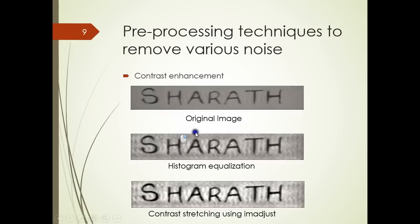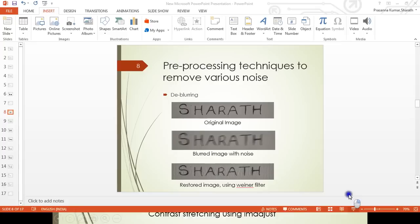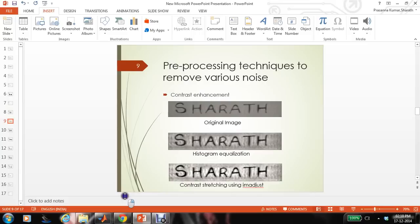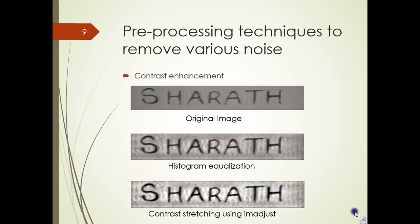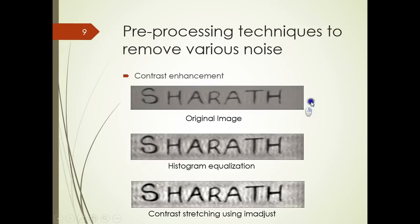One of the preprocessing techniques is contrast enhancement. Contrast enhancement is necessary because the image could be taken in various light intensities. If the intensity of the light is very dull, the image could look unclear. To address this, we need to enhance the contrast and make the image sharper, so we can easily identify the text part and remove the background. Applying histogram equalization gives one kind of output, and enhancing the contrast using imadjust in MATLAB gives another. We can see a clear change in contrast from the initial image to the final image.